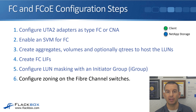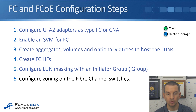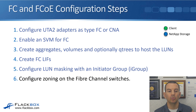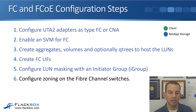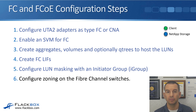Looking at configuration steps for Fibre Channel and FCoE — they're both configured exactly the same way because ONTAP sees them as essentially the same. First, configure UTA2 adapters as either type Fibre Channel or CNA. Then create the SVM and enable Fibre Channel on there. Create aggregates if you don't have them already, volumes, and optionally qtrees to host the LUNs. Then create Fibre Channel logical interfaces with WWPNs. Next, configure LUN masking with an initiator group. The configuration is very similar to how we configured iSCSI.